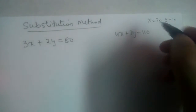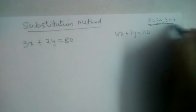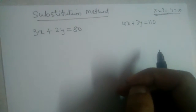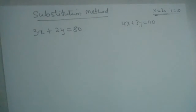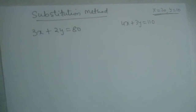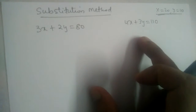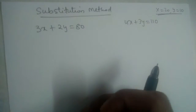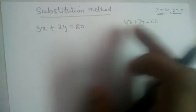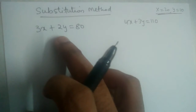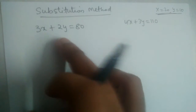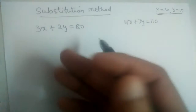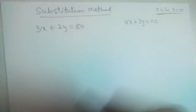In the substitution method, we take any one of the equations — either the first or the second — and find the value of one variable in terms of the other variable.